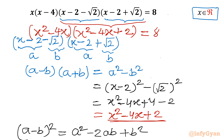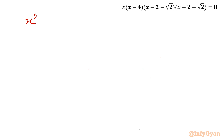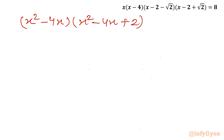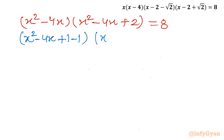So the product equals 8. We now have the equation (x² minus 4x) times (x² minus 4x plus 2) equals 8. To apply the perfect square method, I rewrite this as (x² minus 4x plus 1 minus 1) times (x² minus 4x plus 1 plus 1) equals 8.